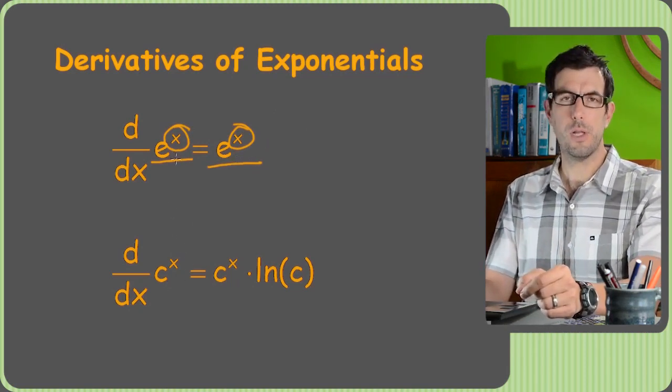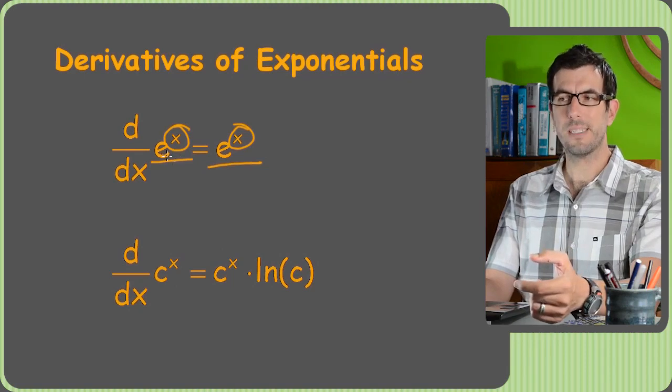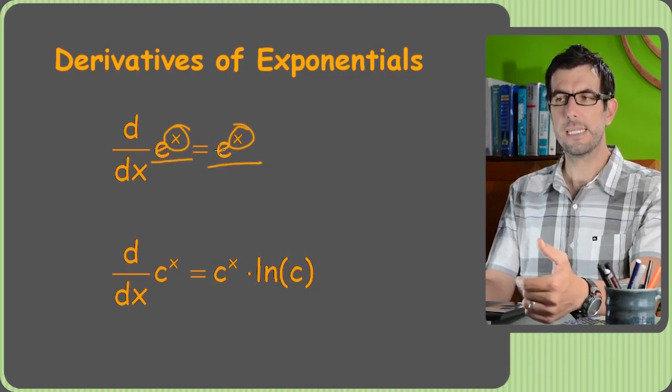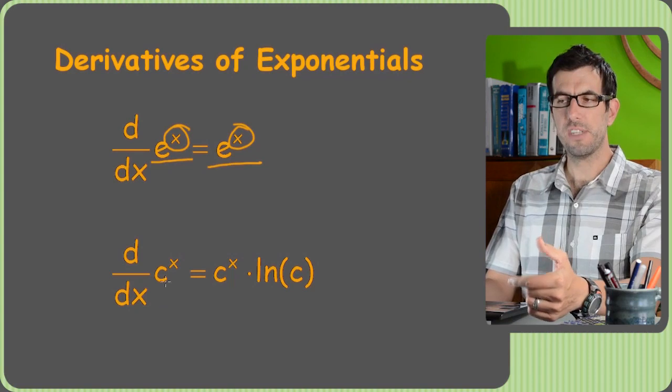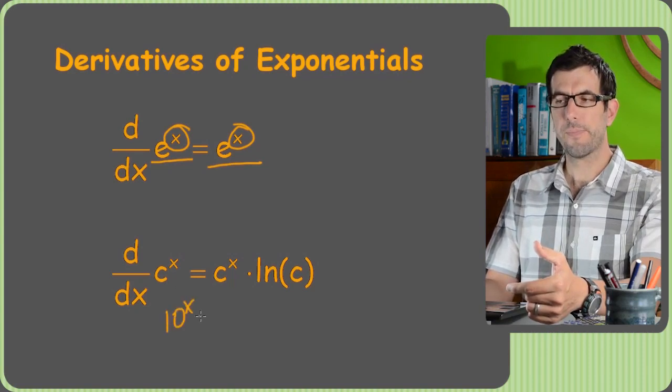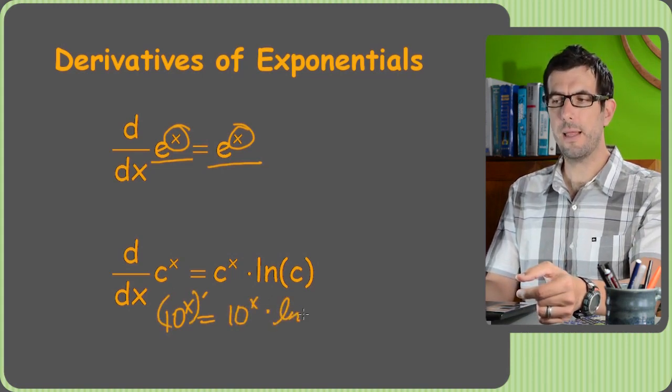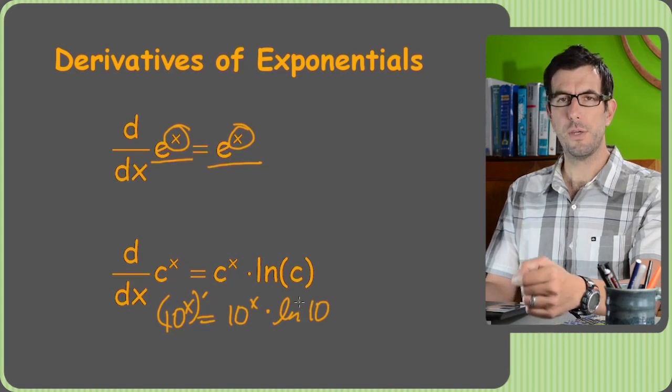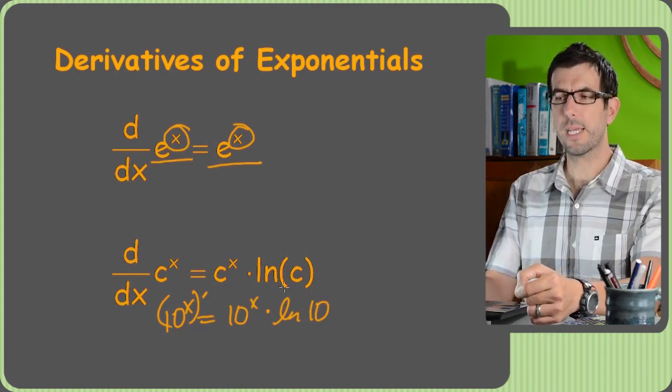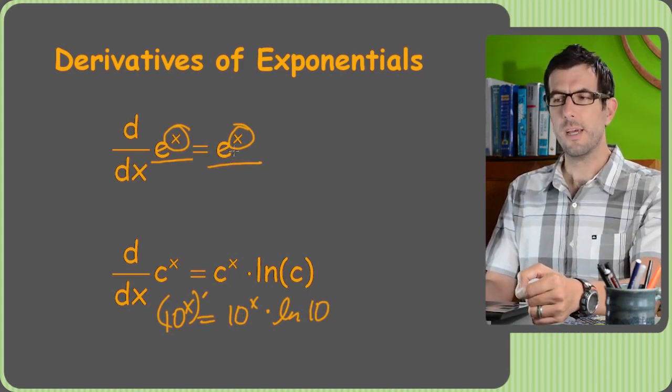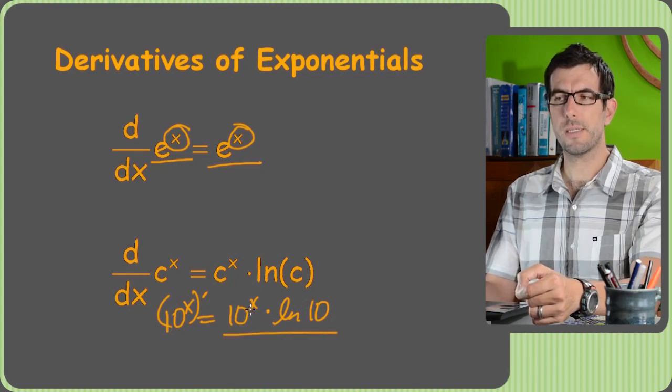So that's the natural log exponential, or when the base is e, the derivative of e to the x is e to the x. The derivative of c to the x, like 10 to the x, is not just 10 to the x. It's 10 to the x times the ln of 10. So that's a little wrinkle you'll see in the exponentials with something other than e. The truth is you hardly ever come across this.